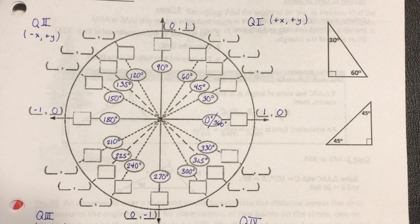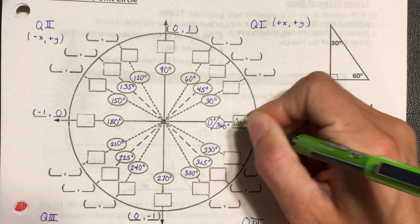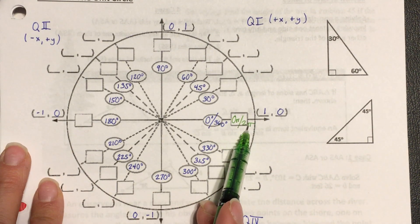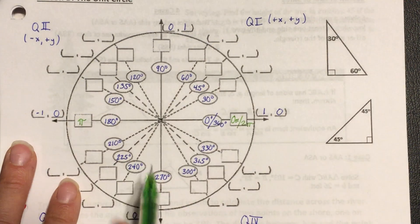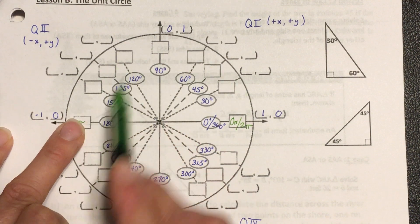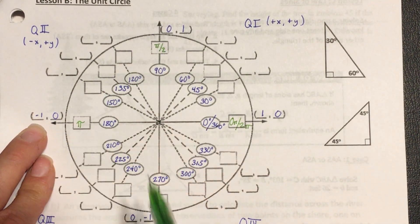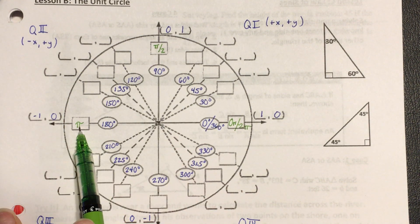Now I'm ready for the radian measurements. I start with the same four angles: 0 and 2π correspond to 0 and 360 degrees. Two pi is the whole circle, so half of that is π, just like 180 is half of 360. Cutting that angle in half again gives π/2. So we go by half-pies: 0, π/2, π, 3π/2.